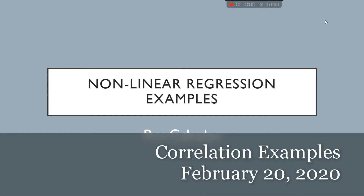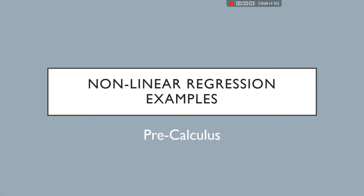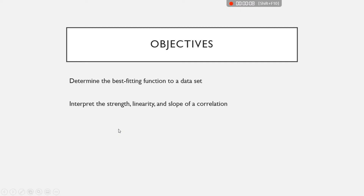We're continuing with nonlinear regression. The goals are the same as last time: determining the best fitting function to a data set and interpreting the strength, linearity, and slope of a correlation.